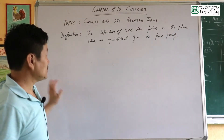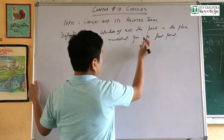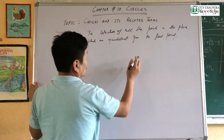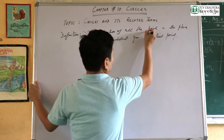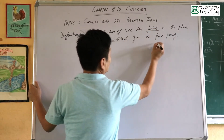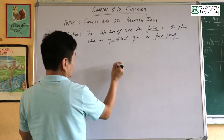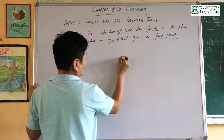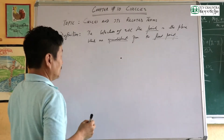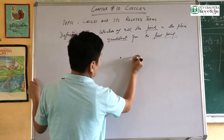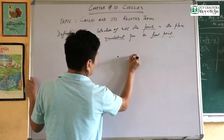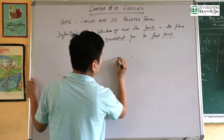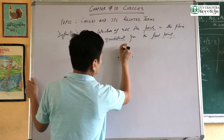The definition is the collection of all the points in the plane. A circle is a collection of all points in a plane that are equidistant from a fixed point. The fixed point is called the center, and equidistant means each point is at the same distance from that fixed point.